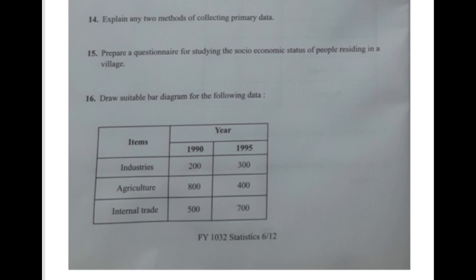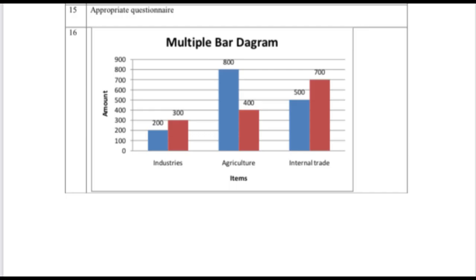You will also learn about questionnaires and the qualities of a good questionnaire. A questionnaire covers general things such as name, age, occupation, address, number of members, house, and family. It also covers specific things like the socio-economic status of people in a village or community.